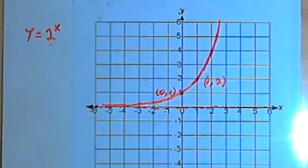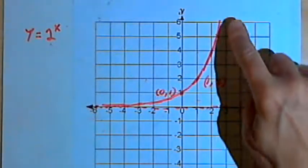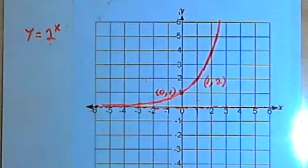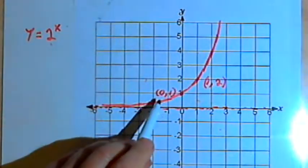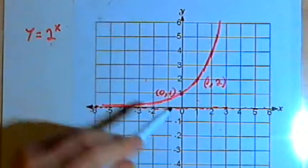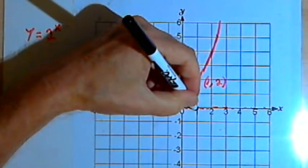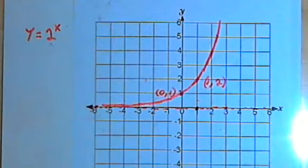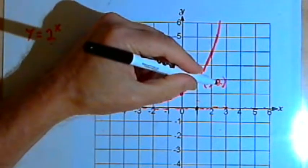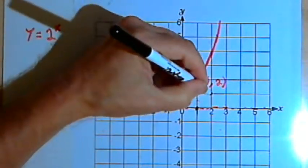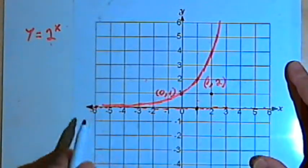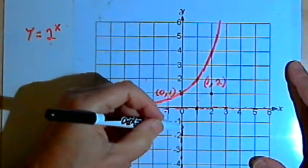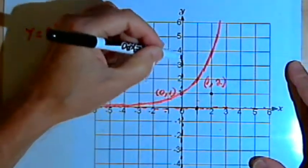Now what I want to do is look at its inverse. To draw the inverse of this graph, all I have to do is take some points and swap the x and y values. So if I have a point at 0, 1, the inverse should go through the point 1, 0. If I've got a point at 1, 2, the inverse should go through the point 2, 1. And if I've got a horizontal asymptote along the x-axis, I should have a vertical asymptote along the y-axis.